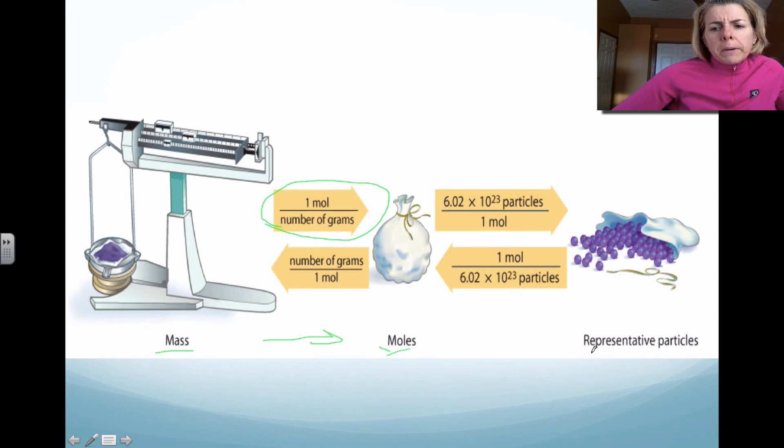If you're going from moles to particles, so if you're going in this direction, notice that you're going to use this conversion factor, which is Avogadro's number divided by moles. And that will give you the number of particles. If you're going from particles to moles, notice that you're going to use the other arrow. But like I said, this diagram is extremely useful for deciding what type of conversion factor you're going to use.